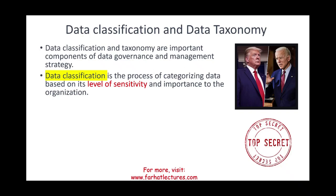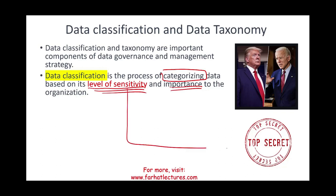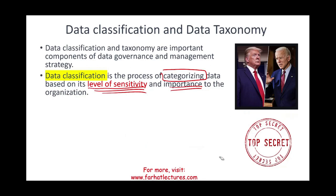Data classification is the process of categorizing data based on the level of sensitivity and its importance to the organization. The best example I can give you is when the government designates something top secret. It classifies files as top secret — and you can see this with former President Trump and current President Biden. Sometimes there is confusion about what is top secret and what is not, but this is what we mean by data classification.